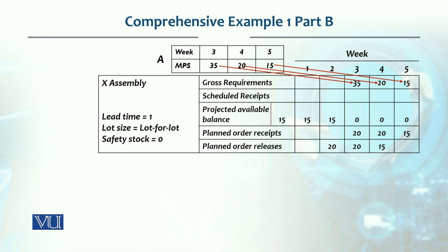This is based on A production. We have a lead time of one week. The production is lot-for-lot, meaning the amount of requirement is exactly the quantity produced, and the safety stock is 0. This inventory data shows 15 units available in beginning inventory.